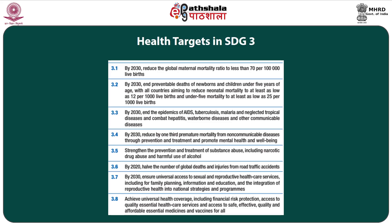Target 3.4 talks about reducing by one-third premature mortality from non-communicable diseases through prevention and treatment, and promoting mental health and well-being by 2030. Target 3.5 talks about strengthening the prevention and treatment of substance abuse including narcotic drug abuse and harmful use of alcohol. Target 3.6 talks about reducing the number of global deaths and injuries from road traffic accidents by half. Target 3.7 talks about ensuring universal access to sexual and reproductive health care services including family planning, information and education, and integration of reproductive health into national strategies and programs by 2030. Target 3.8 aims at achieving universal health coverage including financial risk protection, access to quality essential health care services, and access to safe, effective, quality and affordable essential medicines and vaccines for all.